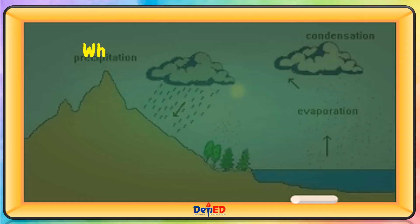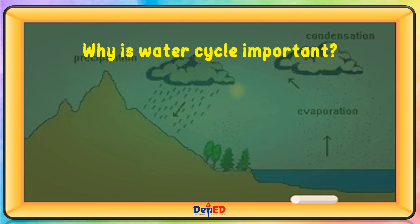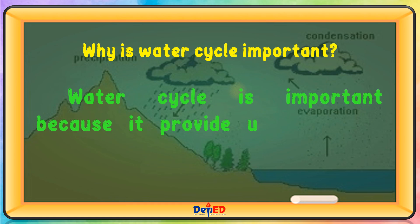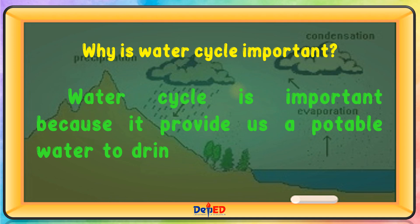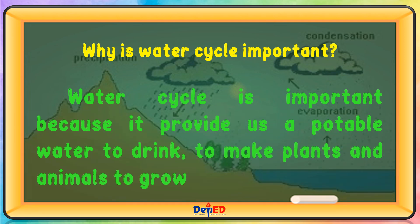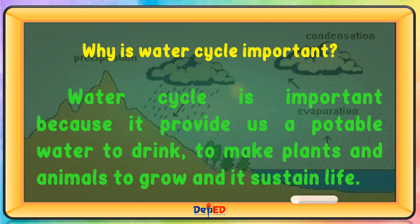Why is the water cycle important? The water cycle is important because it provides us potable water to drink, enables plants and animals to grow, and it sustains life.